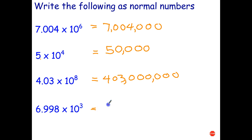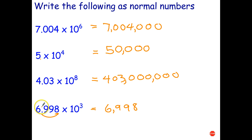The last one illustrates an important point. Move the decimal point three places to the right: 6, 9, 9, 8. The point is, for numbers that aren't really very big — like 6,998 — there's really no benefit in writing that in scientific notation. It's much more complicated than the number itself. But when you've got larger numbers, like 403 million, it makes sense to write those in scientific notation. In the next video, we're going to show you how to write really small numbers in scientific notation.